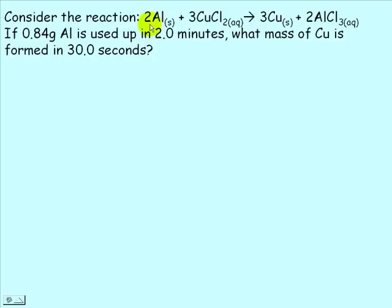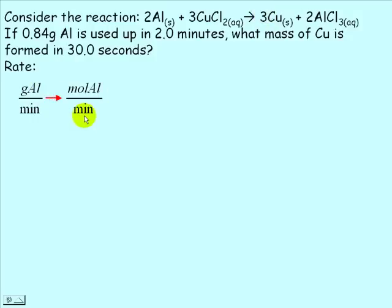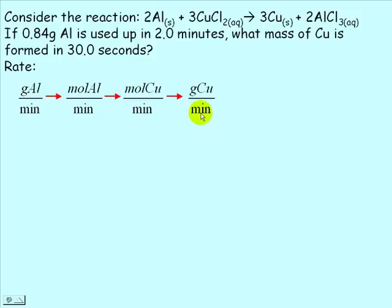Here's a second problem: a single replacement reaction of aluminum and copper(II) chloride giving copper and aluminum chloride. The rate is given in grams of aluminum used up in 2 minutes, and we must calculate the mass of copper formed in 30 seconds. The rate is in grams of aluminum per minute. To go from aluminum to copper, we convert: grams of aluminum per minute → moles of aluminum per minute → moles of copper per minute → grams of copper per minute → grams of copper per second.